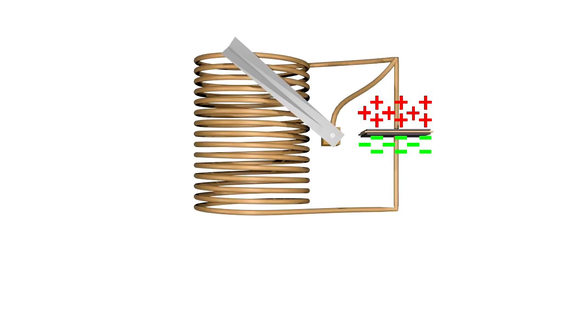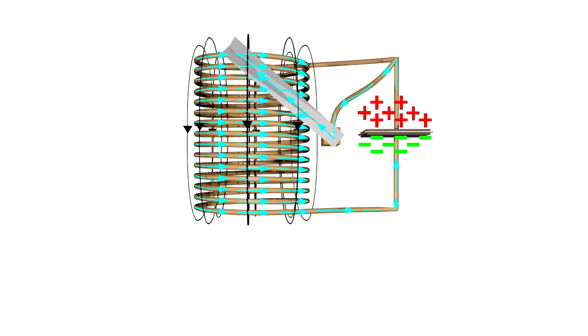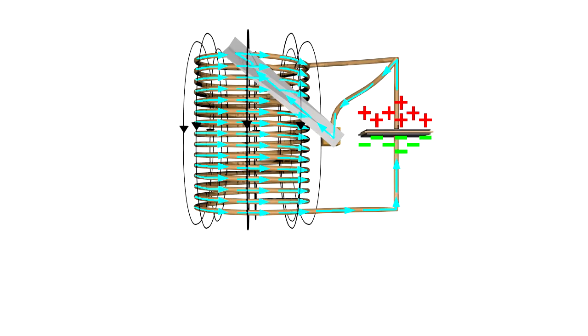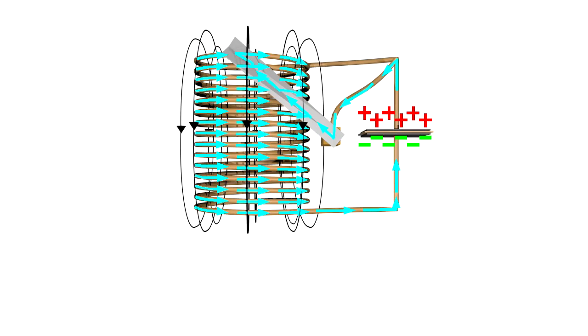We're also back to where we started with the charged capacitor - no current and a short circuit. The energy that was in the magnetic field is now stored in the electric field, in the capacitor. And since we essentially have a short circuit, the capacitor starts to discharge.